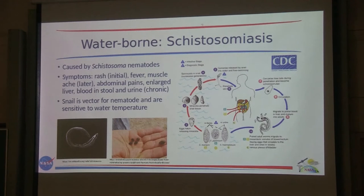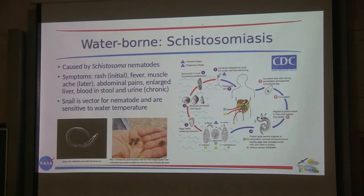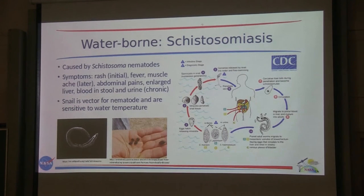Schistosomiasis — some consider it vector-borne, others waterborne. It's caused by a worm, a nematode: eggs are deposited in water via human feces or urine, they hatch, immature worms infect snails, complete a life cycle in the snail, leave the snail, and then penetrate through human skin or lacerations when people are in water. It's considered vector-borne because the snail is the intermediate host, but also waterborne because you just have to be in the water to get the pathogen. The snail species is critical to the life cycle — without the snail, transmission is broken. The snail is very sensitive to water temperature, and warm waters tend to increase the probability of sustaining infection.